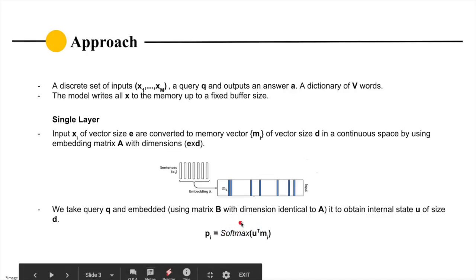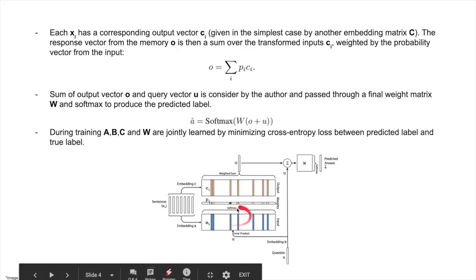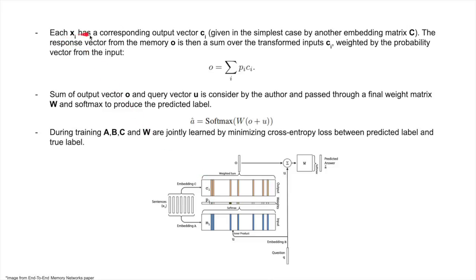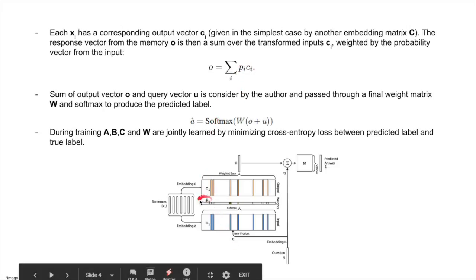Followed by softmax, we get p. Now p is a probability vector over the input, and we take this into an output vector by multiplying with p and C and getting output as o.